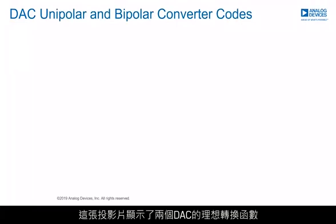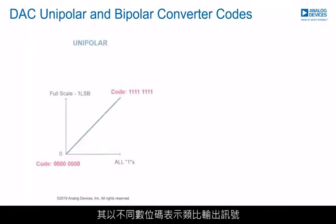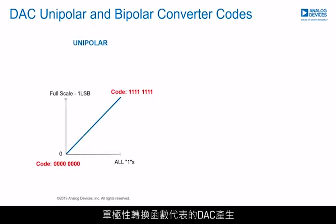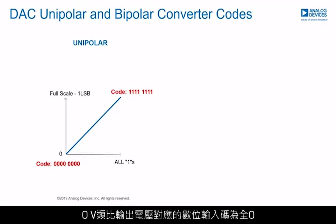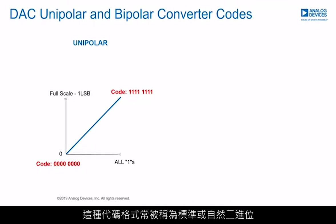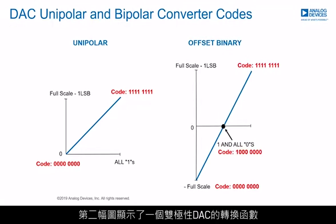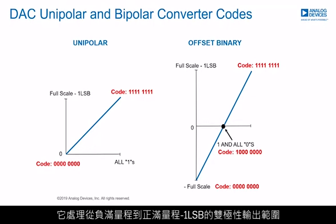This slide shows the ideal transfer function of two DACs with different digital code representations of an analog output signal. The unipolar transfer function represents a DAC which produces an analog output range from 0 to full-scale minus 1 LSB. The digital input code goes from all zeros for an analog output voltage of 0, to all ones for an analog output voltage of full-scale minus 1 LSB. This code format is often called straight or natural binary, and the number of discrete values depends on the resolution of the converter.